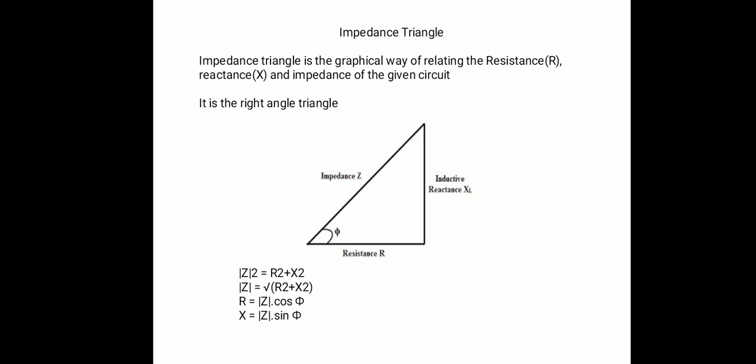From the impedance triangle, R is equal to mod of Z times cos theta, and X is equal to mod of Z times sin theta. So in summary, the impedance triangle is the graphical relation between resistance R, reactance X and impedance Z. It is a right angle triangle with three sides: impedance Z, resistance R and reactance X. Applying Pythagoras theorem gives mod of Z equals the square root of R squared plus X squared, R equals Z cos theta, and X equals Z sin theta.